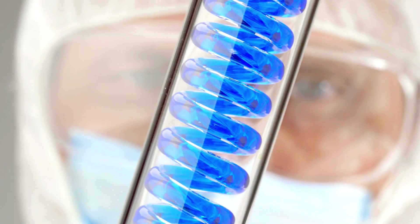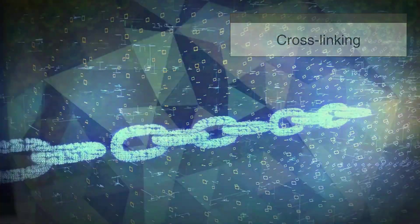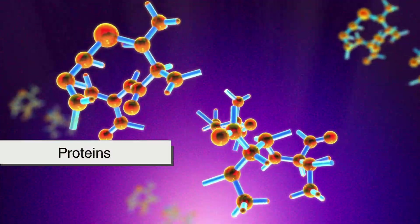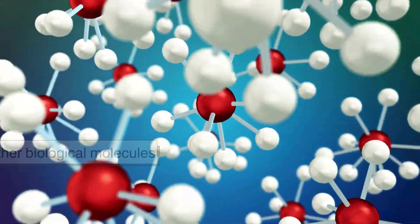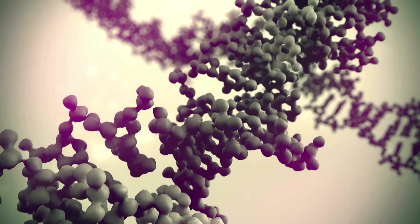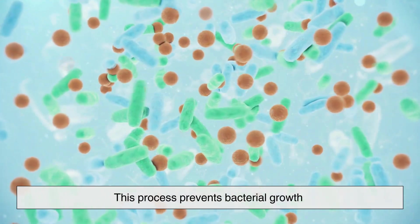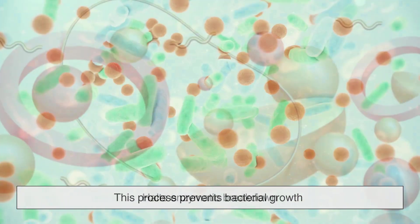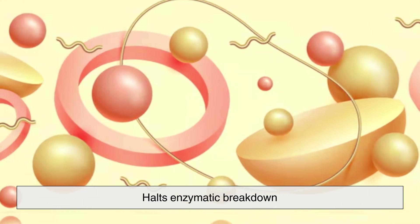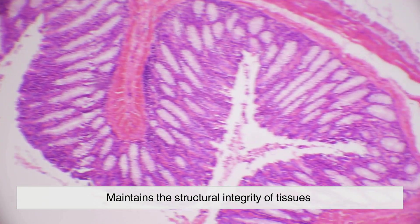The preservation process relies on cross-linking, a chemical reaction in which formaldehyde bonds with proteins and other biological molecules, essentially locking them into place. This process prevents bacterial growth, halts enzymatic breakdown, and maintains the structural integrity of tissues.